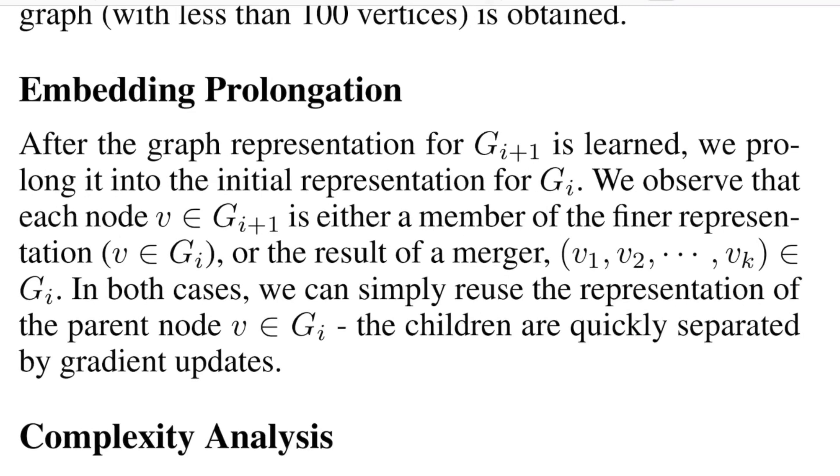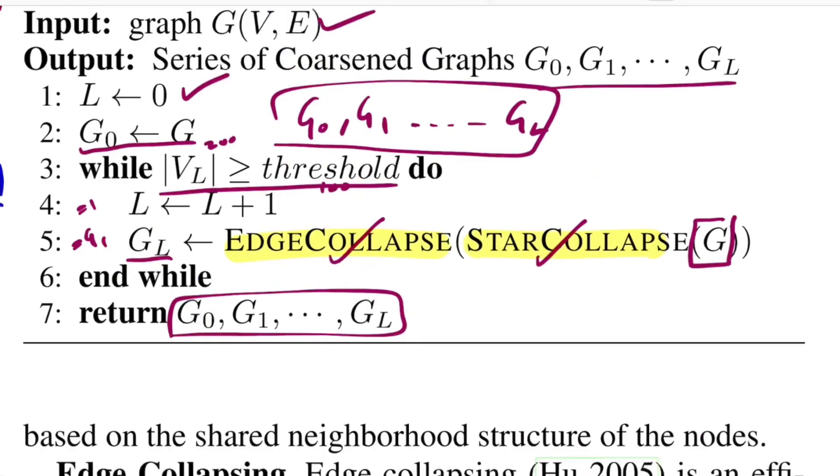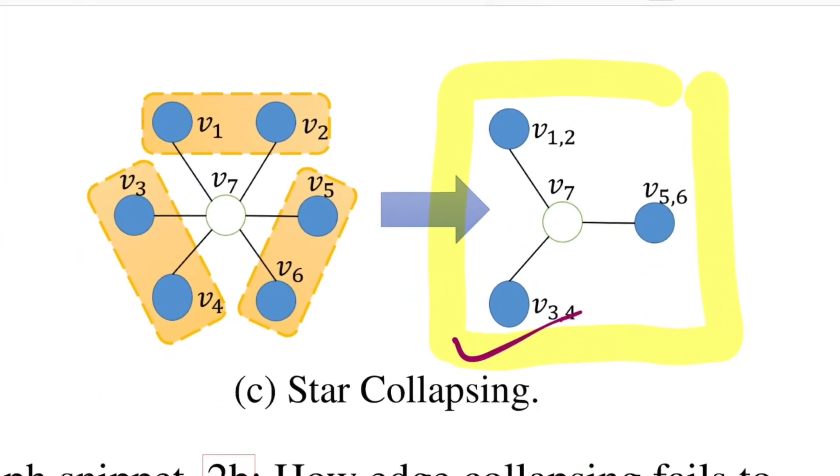Talking of the last step, which is embedding prolongation—we've already discussed you learn embedding for a coarser representation, then use that embedding as an initialization step for the more fine graph, then relearn the embedding, and keep doing it till you get the representation for the original graph. For example, if we consider the case of a star, if this was a graph we had, you apply Node2vec for this algorithm and get the representation for all these four nodes. Let's consider this to be G2 and this to be G1.